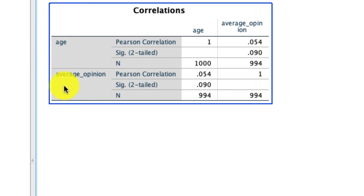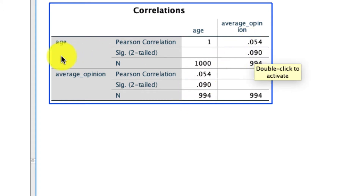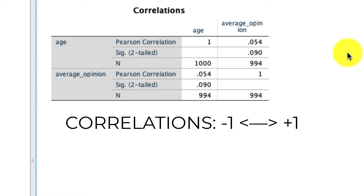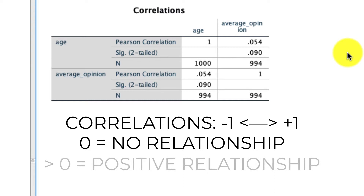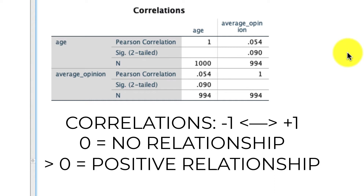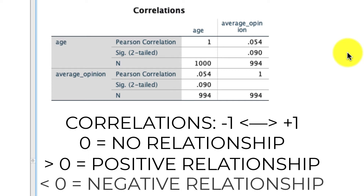What we see is a simple correlation table between two variables. Worth pointing out: this is symmetrical. If I draw a line down the diagonal and flip it over, the values map onto each other — this is the same correlation reported two ways: age relative to average opinion and average opinion relative to age. As a quick reminder, correlation takes a value between negative one and positive one, where zero indicates no relationship. A positive correlation means as one variable increases, the other tends to increase as well; a negative correlation means as one increases, the other tends to decrease. The closer the value is to negative one or positive one, the stronger the relationship.